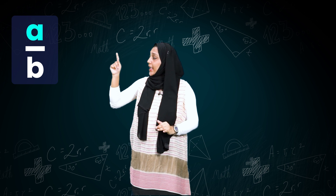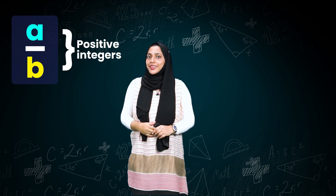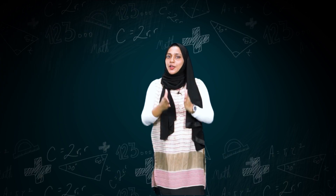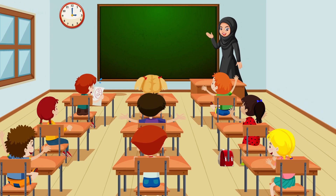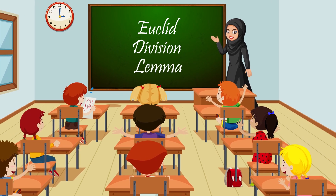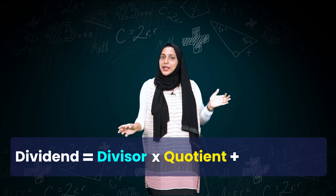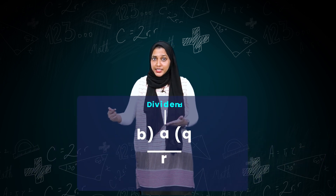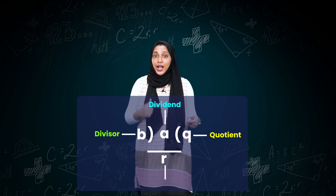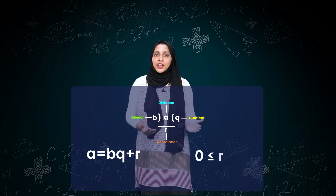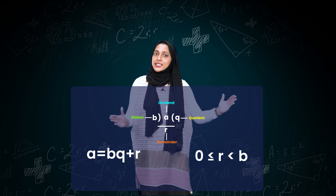Suppose you want to do A divided by B, where A has a restriction — A and B are both positive integers, and obviously the denominator should not be zero. Then you follow this process. In simple words, in lower classes we used Euclid's division lemma to check the accuracy of division. That is: dividend equal to divisor into quotient plus remainder. Here on screen, A is dividend, B is divisor, Q is quotient, and R is remainder. Therefore, A equal to BQ plus R, and the remainder always lies between 0 and the divisor.